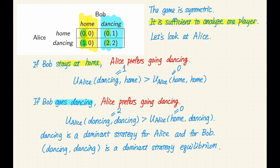In both cases, Alice prefers going dancing. This means regardless of what Bob does, regardless of Bob's strategy, Alice's utility for going dancing is better than Alice's utility of staying at home. And also notice that both inequalities are strict inequalities.